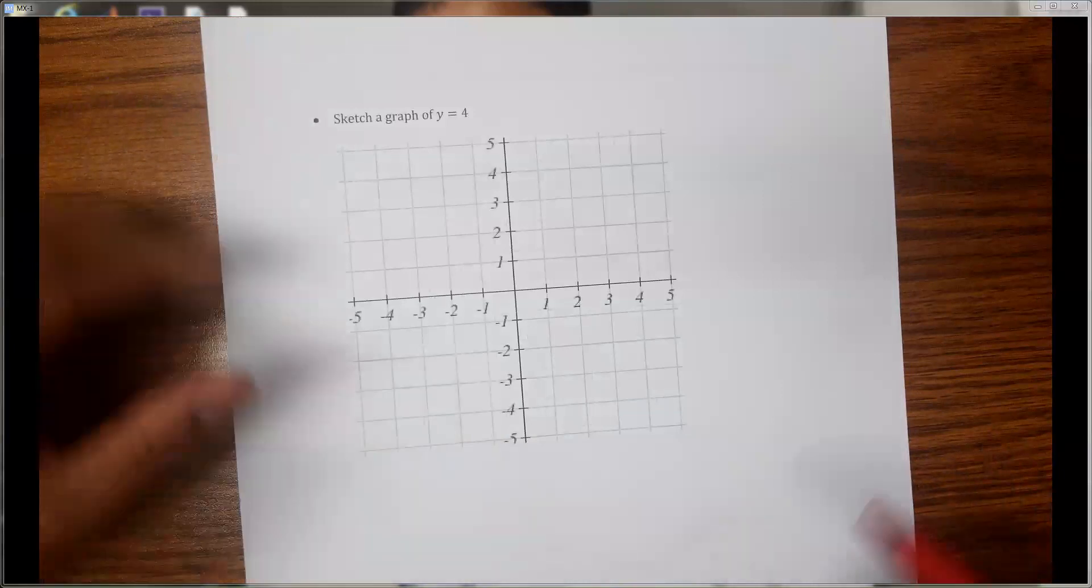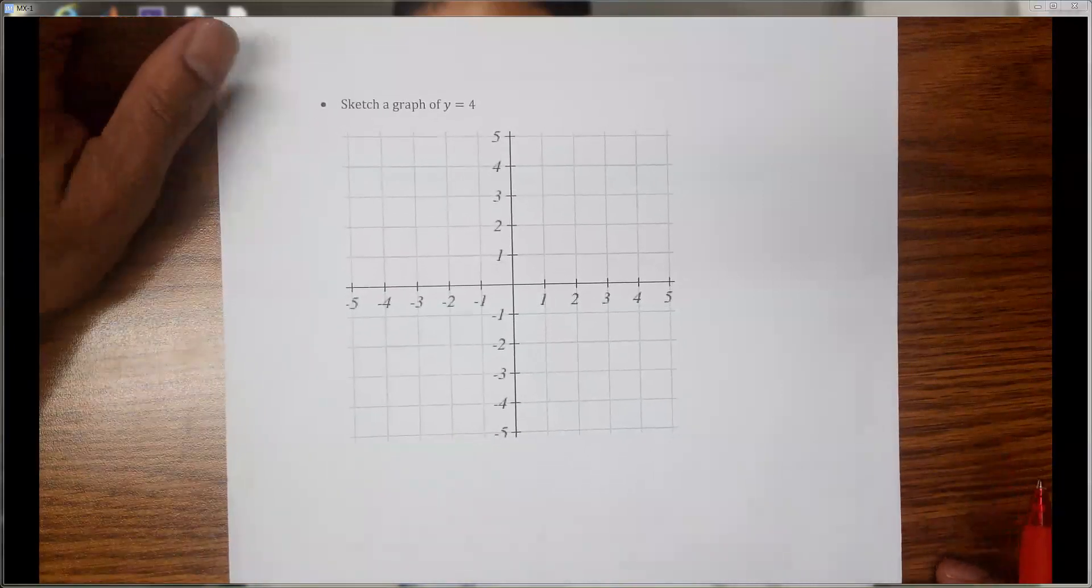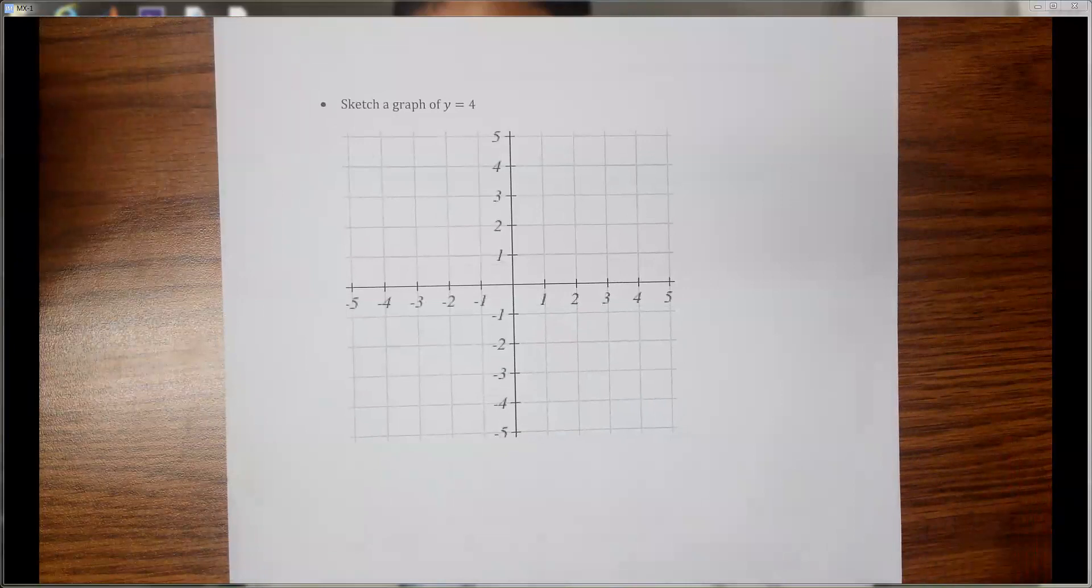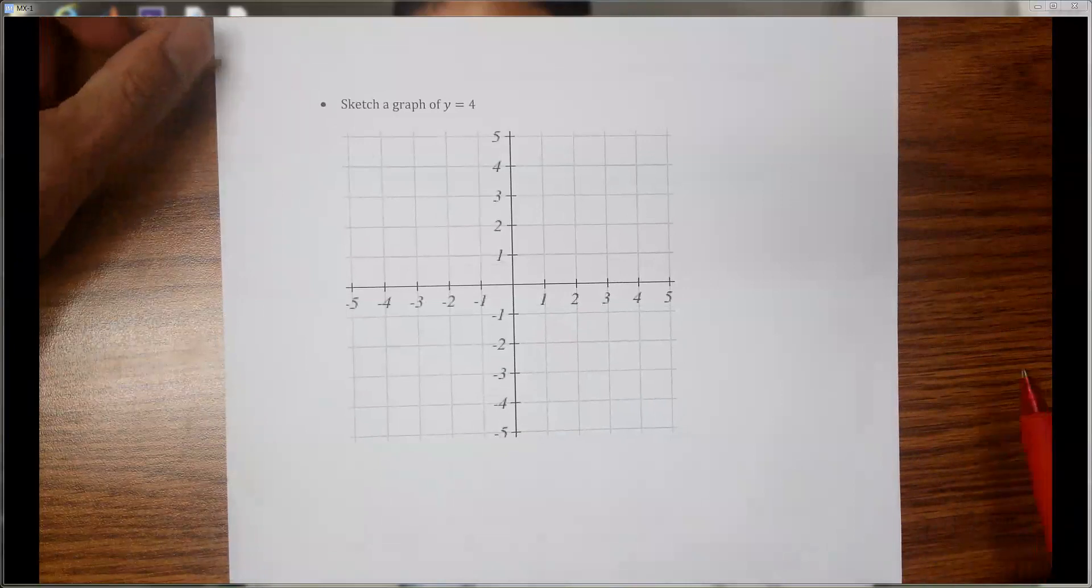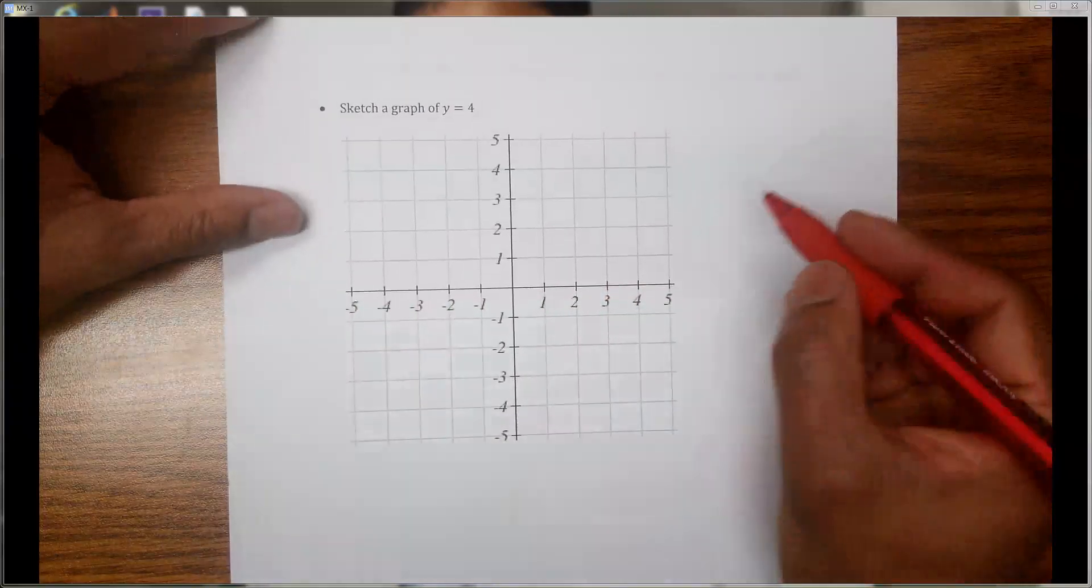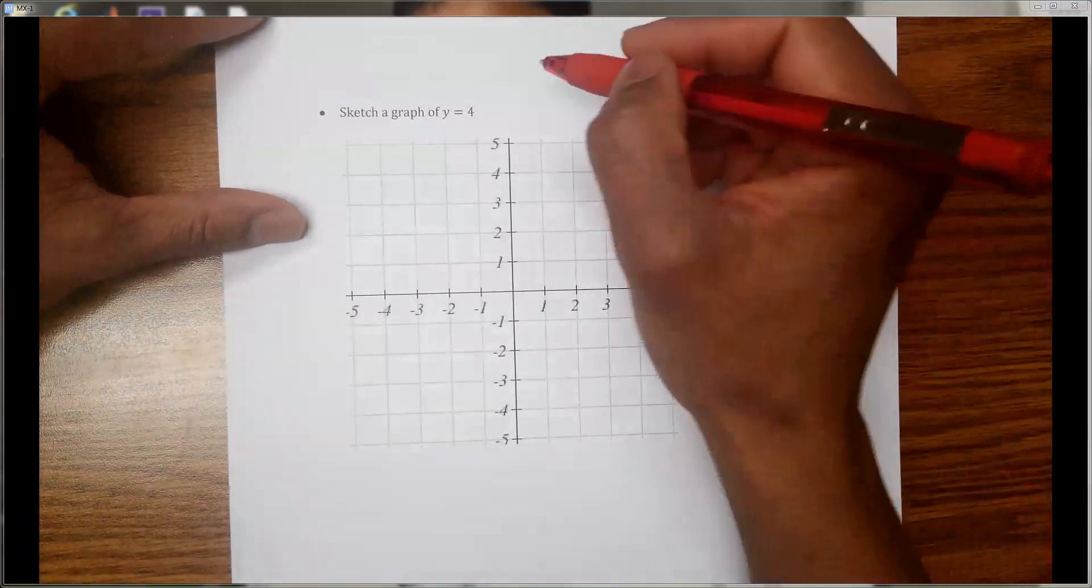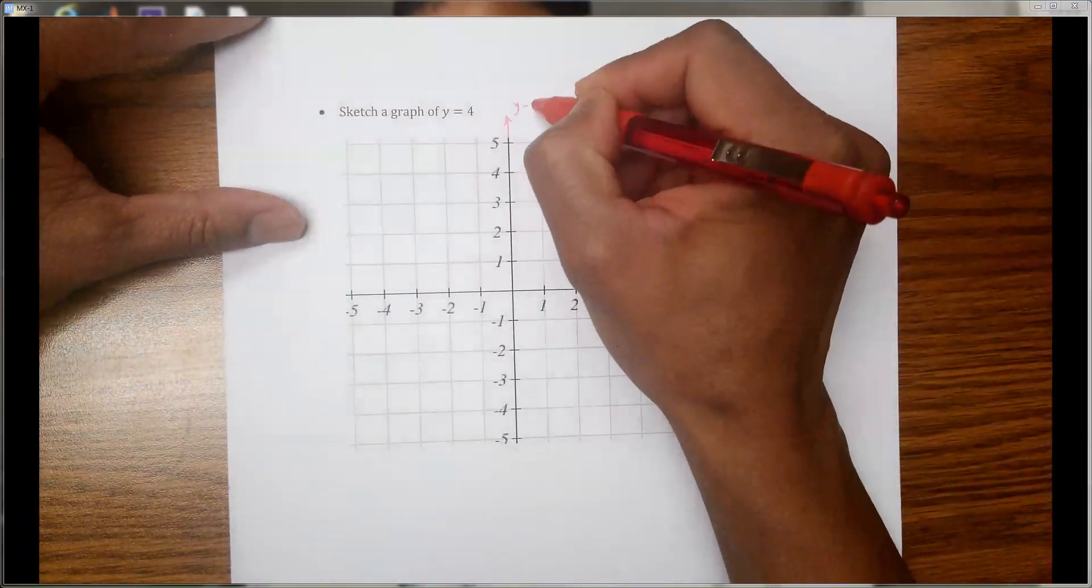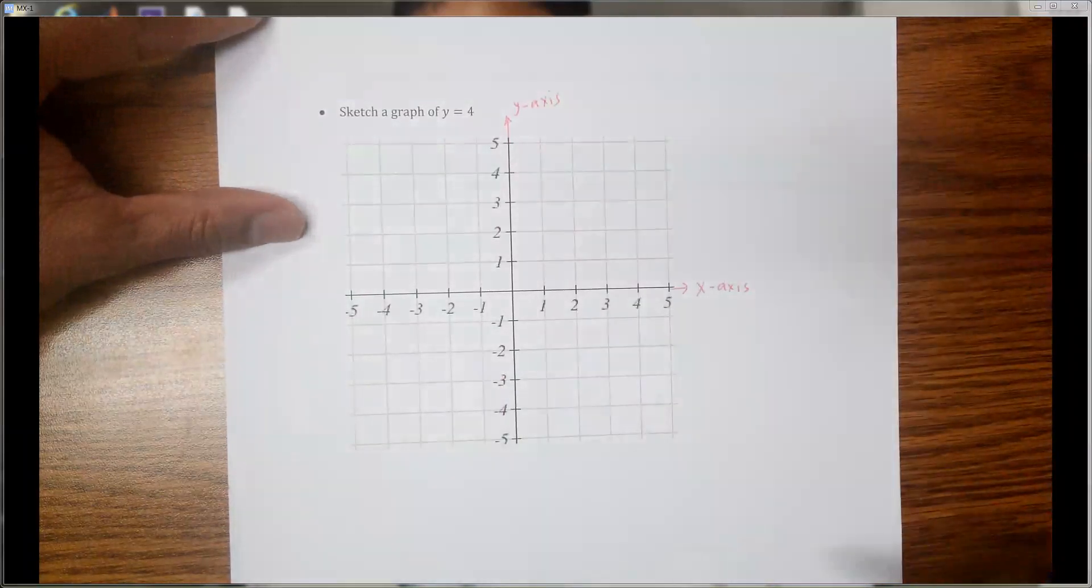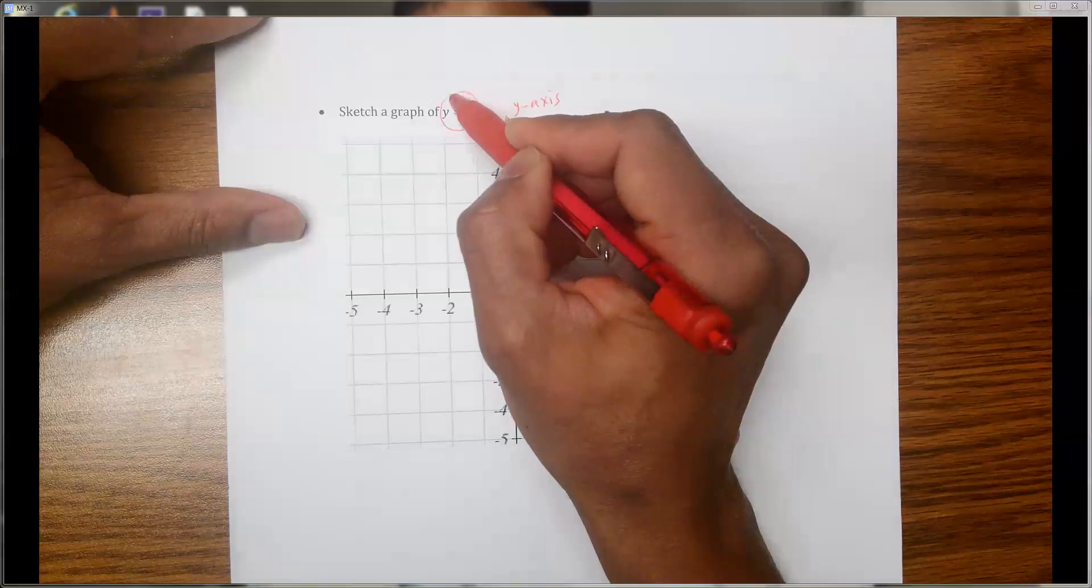In this problem we need to sketch a graph of y equal to 4. Whenever you see y equals some constant, that would be a horizontal line, which means that line should be parallel to the x-axis. This is called the x-axis and this is the y-axis. So we need to draw a graph for y equal to 4.